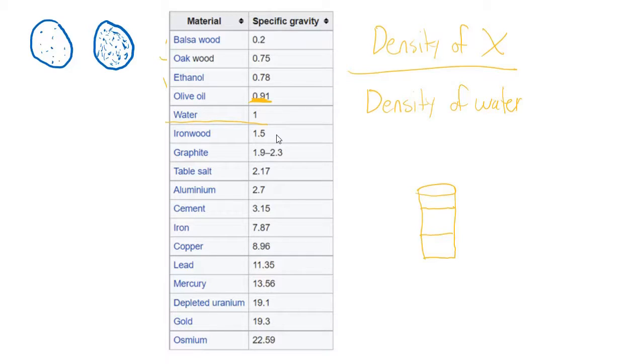So specific gravity is the ratio of the density of an object, or density of a material, to the density of water. So anything below 1 is going to float in water. And anything above 1 is going to sink in water. So this is specific gravity.